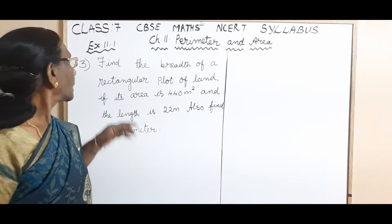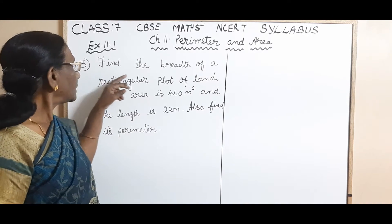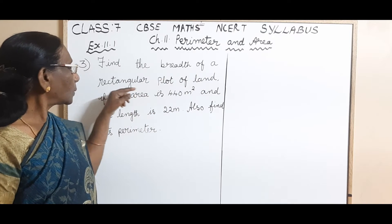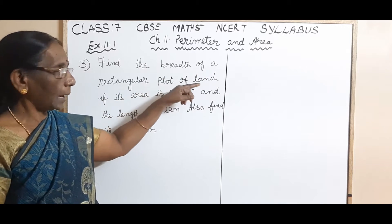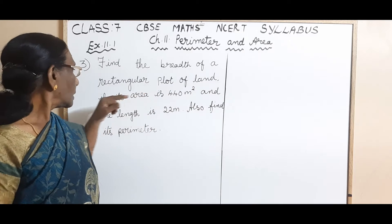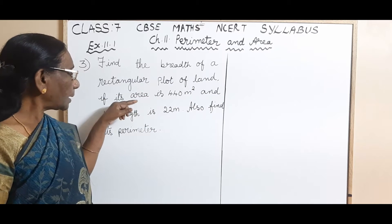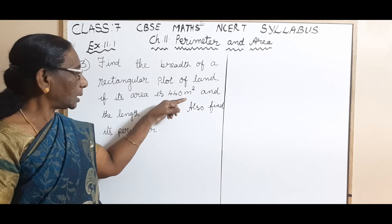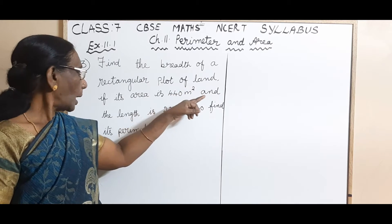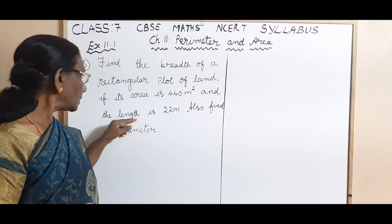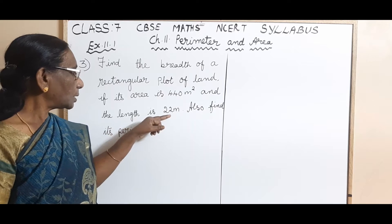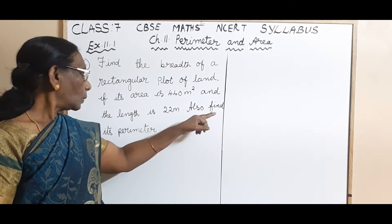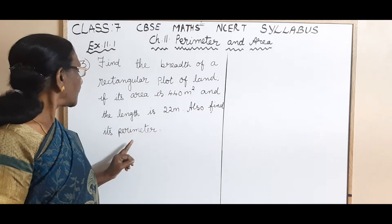The question is: find the breadth of a rectangular plot of land, if its area is 440 meter square and the length is 22 meters. Also find its perimeter.